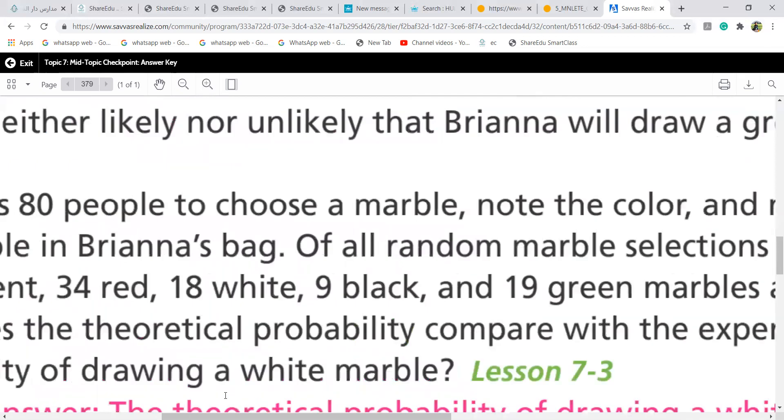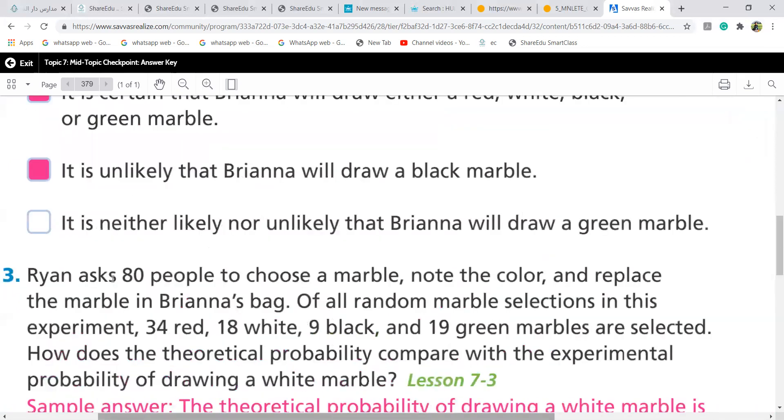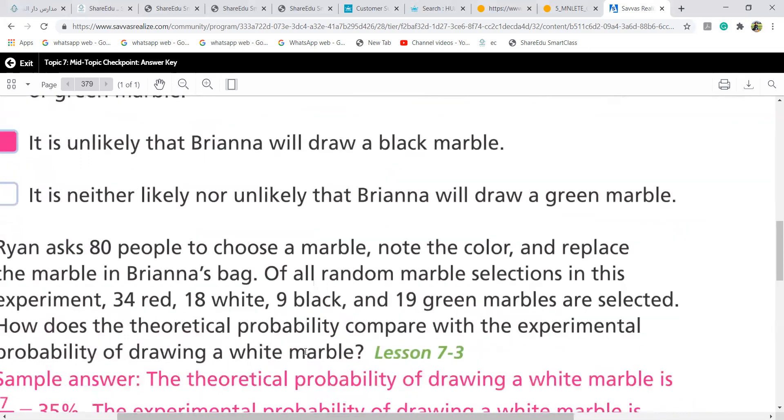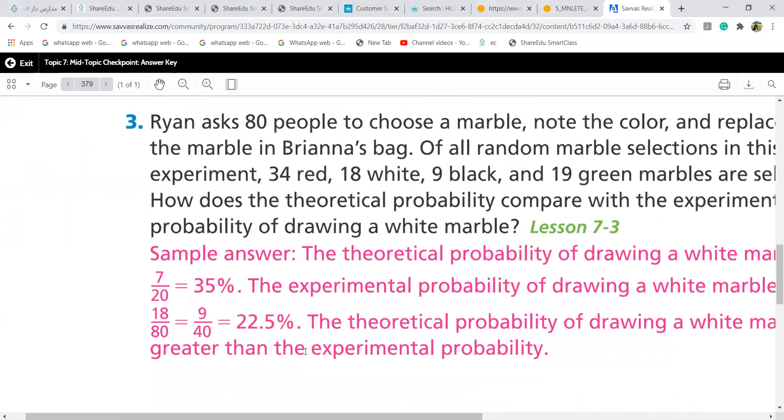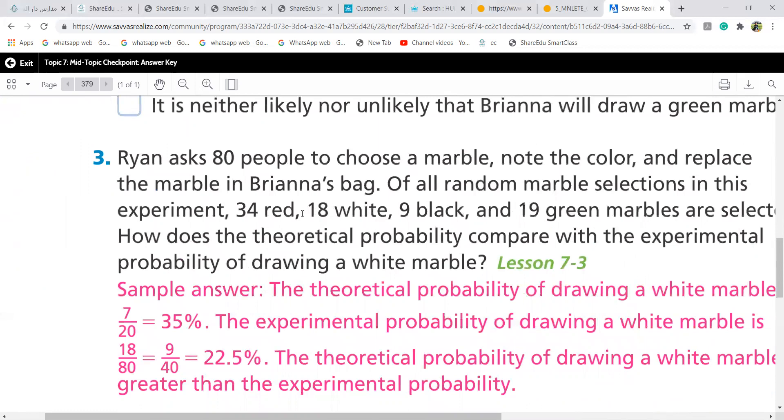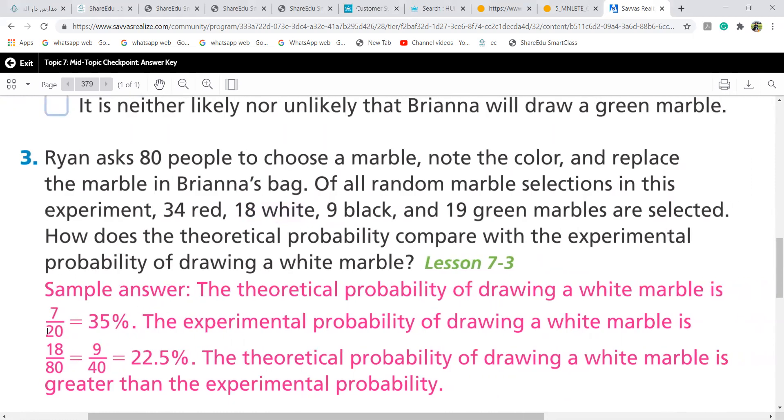Ryan asks 80 people to choose a marble, note the color and replace the marble in Brianna's bag. Of all random marble selection in this experiment, 34 red, 18 white, nine black and 19 green are selected. How does the theoretical probability compare with the experimental probability of drawing a marble? Normally girls, if I say theoretical probability, it will be one by four. Because one marble out of four colors or one out of 80. But when you say the 34, they say compare, how does it compare? Probably white marble. How many white marbles are there? 18.